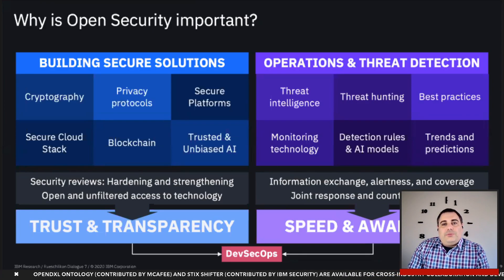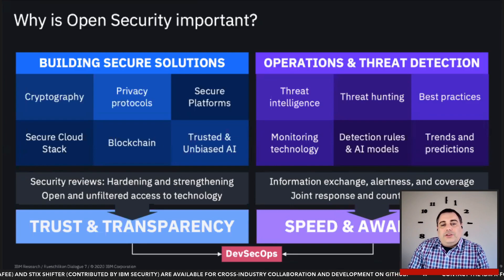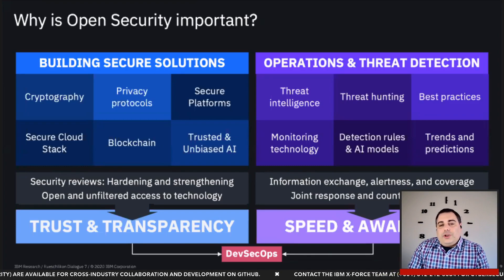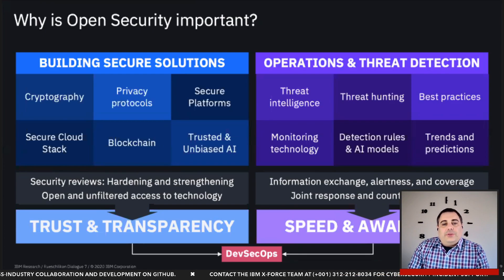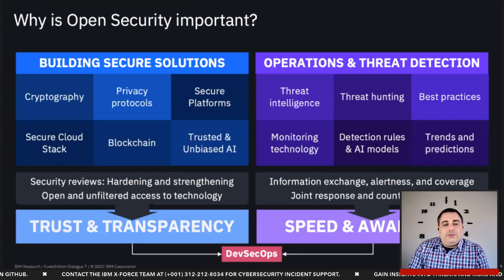On the left, we have some of the basic building blocks when it comes to secure solutions, including cryptography, privacy, platform security, cloud security, and trusted and unbiased AI. As we seek to collaborate on these building blocks in the open, we can enhance trust around them by ensuring that a proper DevSecOps lifecycle is wrapped around the consumption of these technologies. As we shift right and attempt to secure our actual environment, open security can be a vital tool in our arsenal as we seek to combat novel threats by engaging in increased collaboration and information exchange across the community. The knowledge gained from these communities can then be mapped back into our solution creation during that DevSecOps lifecycle, completing the feedback loop.